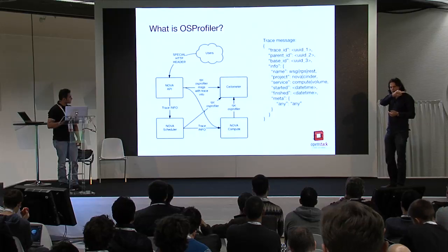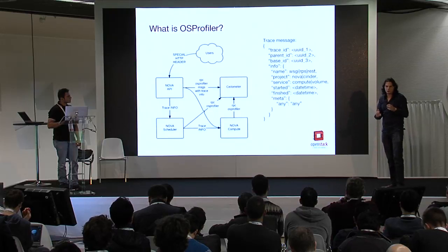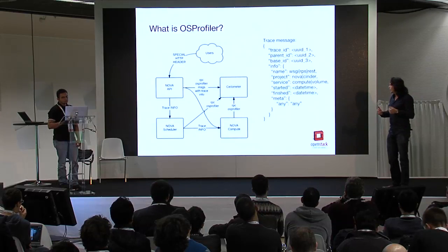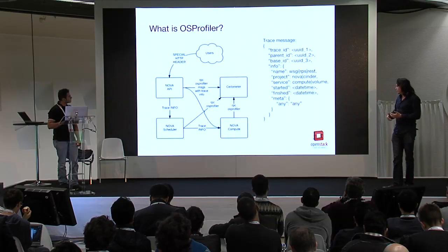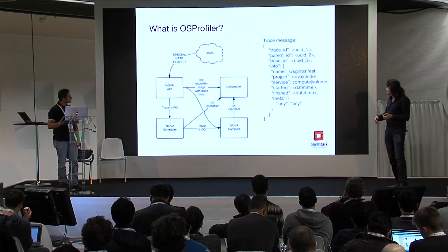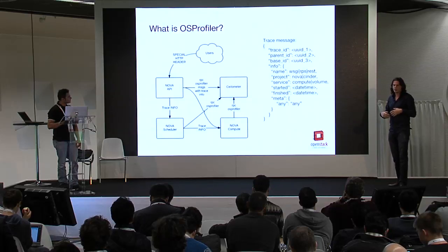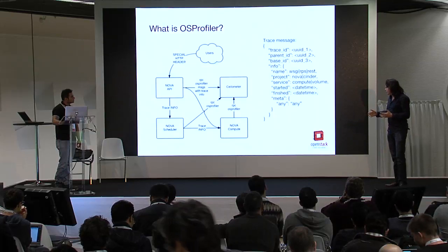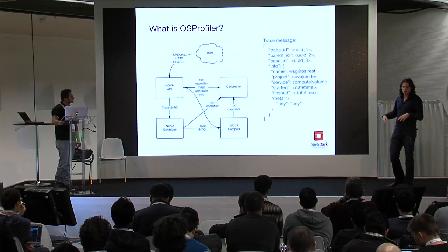Every trace message contains three trace IDs. One trace ID is related to the request and is the same for all messages related to that request — this allows us to fetch all messages related to one request. The second is the parent ID, which is the trace point that came before. The base ID is the ID of the current point. In the info field we can put at least the name, the type of the point — WSGI, RPC, REST — and the project information: Nova, Cinder, Glance, or others. Every project has services, so we also put the service name: compute, volume, Nova Scheduler, Cinder Scheduler. And we record when it started or finished, plus any additional metadata.